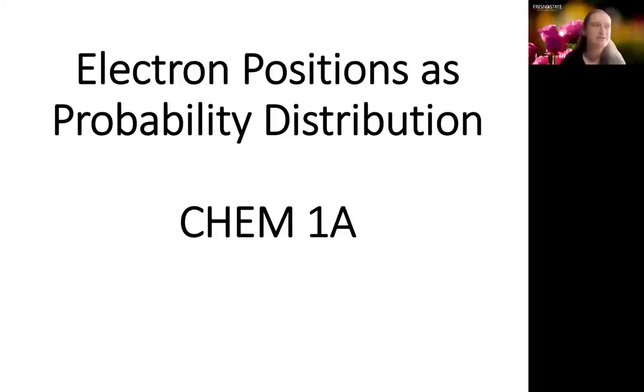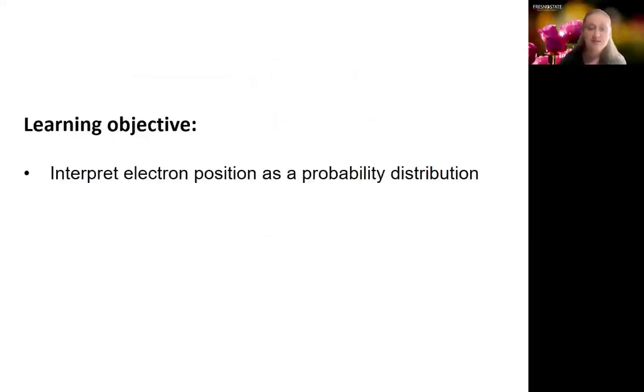In this Chem 1A video, we're going to discuss interpreting electron positions as probability distributions. This is your first step towards meeting the learning objective of being able to interpret electron positions as a probability distribution.